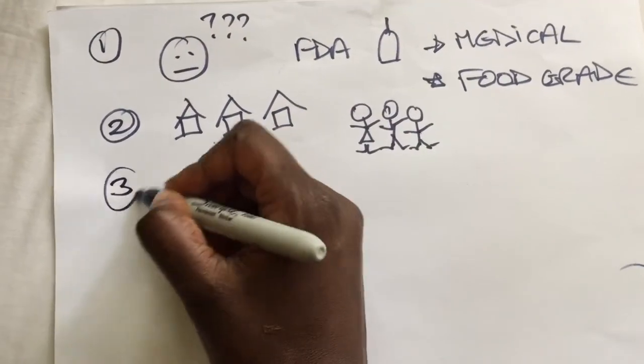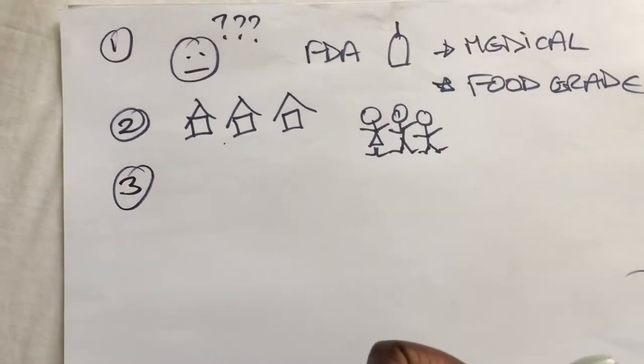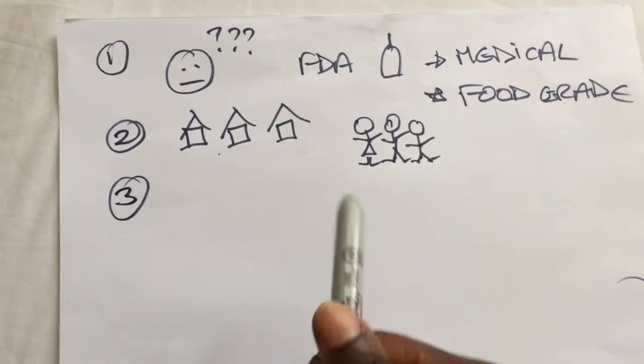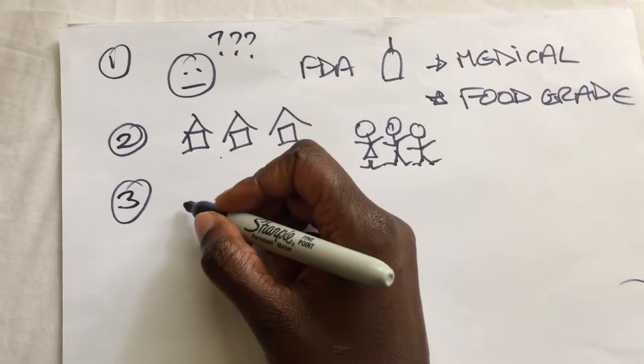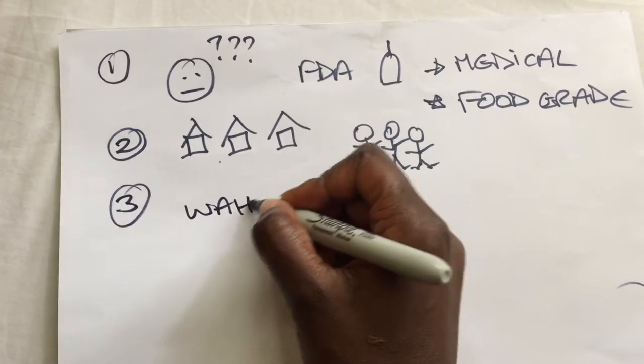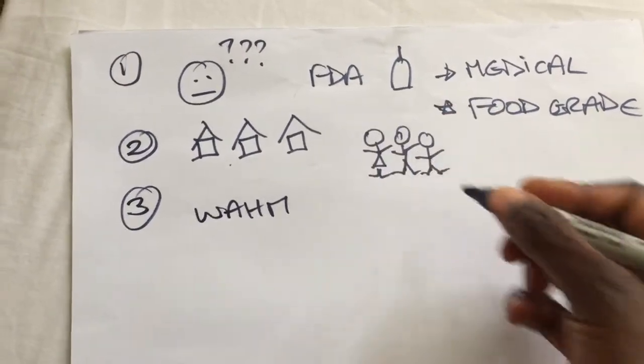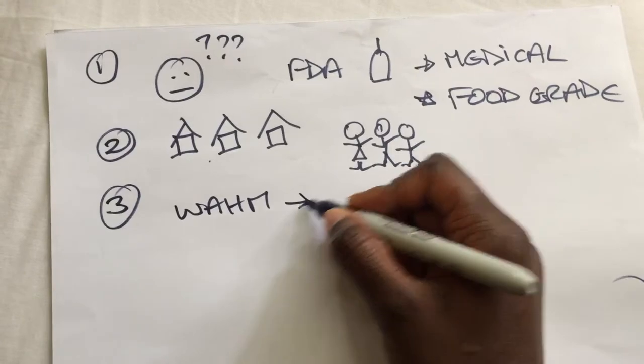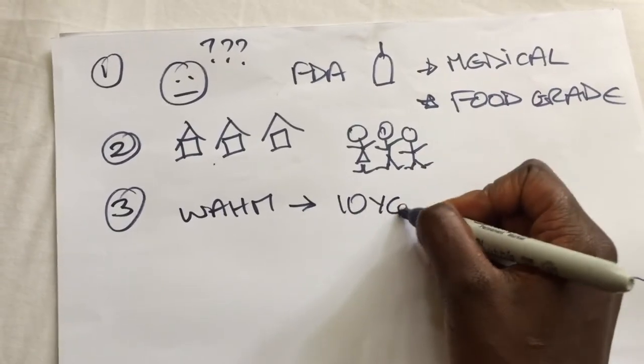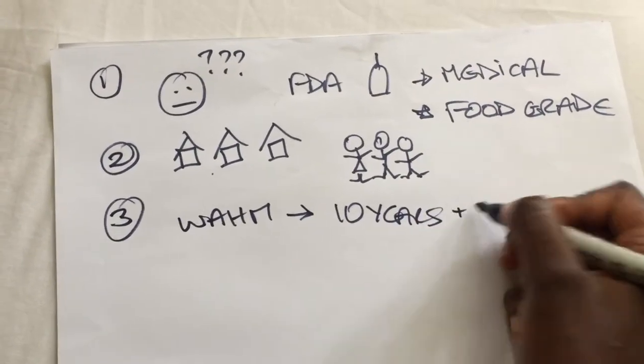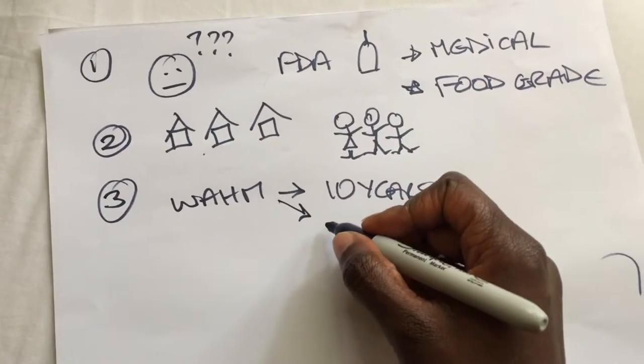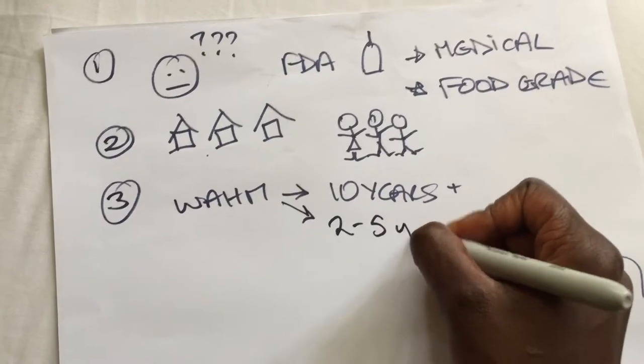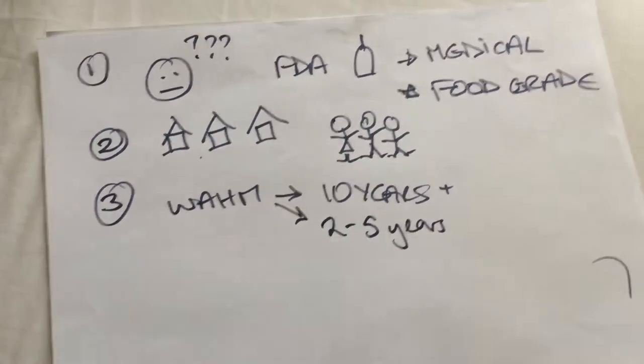The third one is the quality of ingredients. So we've already sort of touched on that, but you might find that your WHAM pad will last 10 years plus. Now your China cheapies may not, your China cheapies may last you maybe two to five years at a stretch.